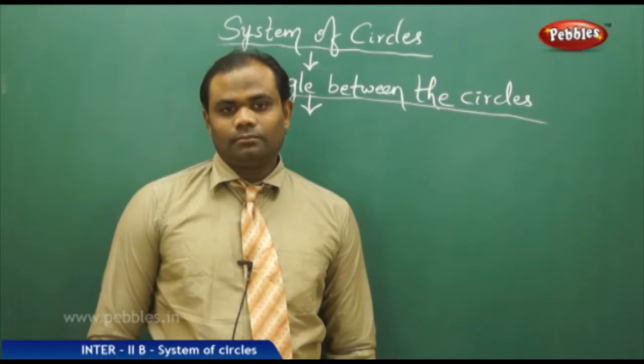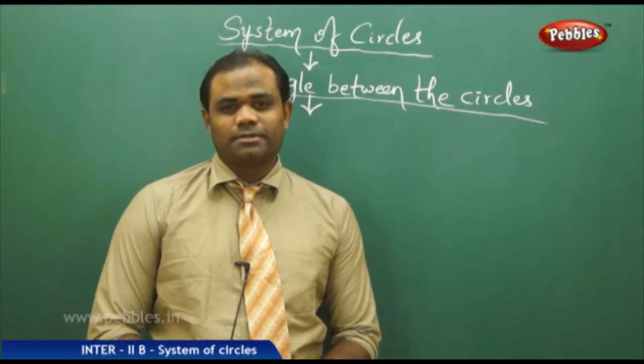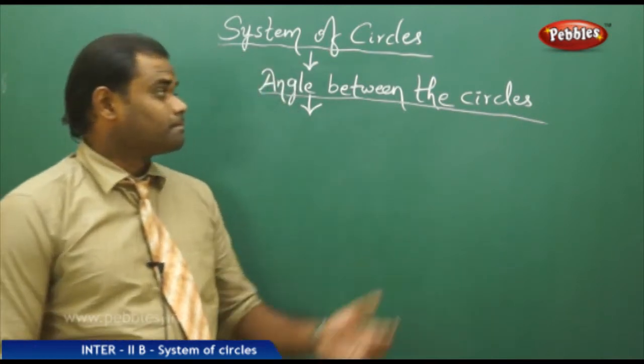With C equal to 1 we get the initial circle, C equal to 2 gives the next, and when C is 100 we get a larger circle. All these form the concentric circle system seen in the x-y coordinate system, and the whole system depends on C. This is how we define the system of circles. Next is the concept of angle between the circles.